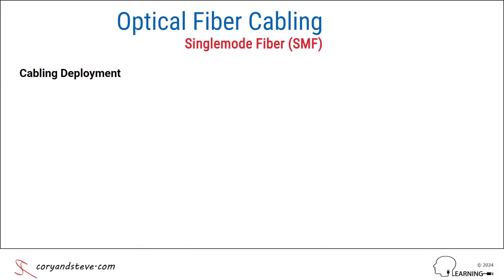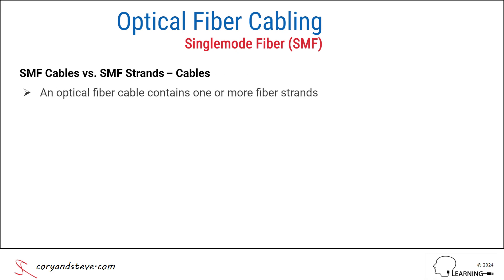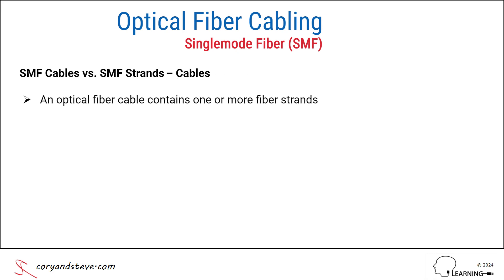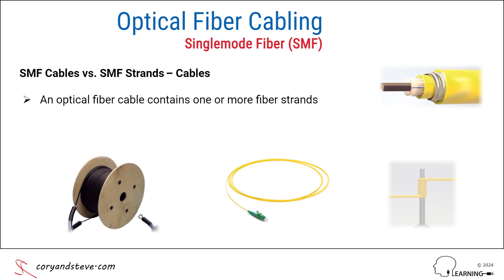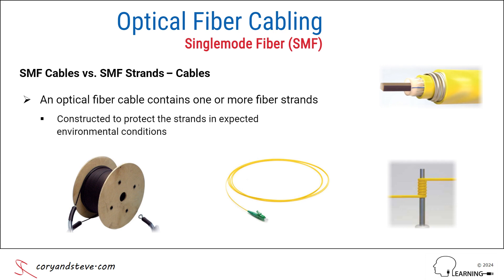Our next stop is a look at single-mode fiber cables and single-mode fiber strands. From a standards perspective, it's important to make a distinction between optical fiber cables and the individual fiber strands they contain, as there are different standards that apply to each. Fiber cables, including cords or jumpers, are designed to protect the strands within from various environmental conditions, both indoors and especially outdoors. One extreme example is a submarine fiber cable that's dropped to the bottom of an ocean.